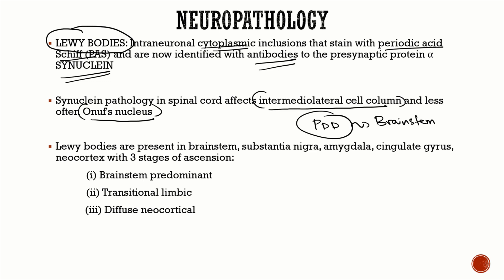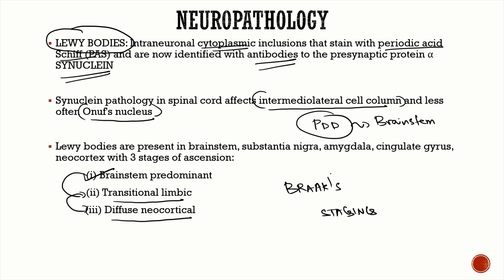There are three stages of ascension: Lewy bodies are initially present in the brain stem, the next stage is transitional limbic, and the final stage is diffuse neocortical. But even before affecting the brain stem, these Lewy bodies initially present in the enteric nervous system and the autonomic nervous system, then ascend into the brain stem, then limbic cortex, and finally diffuse neocortical involvement. This staging is known as Braak staging — a very important MCQ.